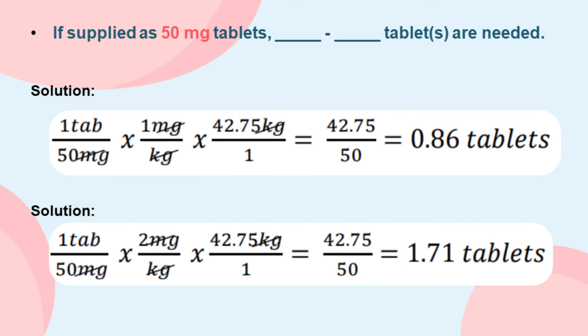If supplied as 50-milligram tablets, how many tablets are needed? Again, identify the given and substitute into the formula. Cancel out terms, multiply, and divide. For the second dose at 2 milligrams per kilogram, substitute the given into the formula again, cancel out terms, multiply, and divide to get both answers.